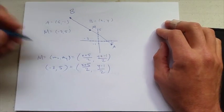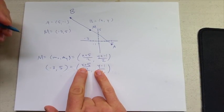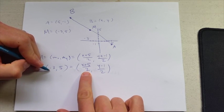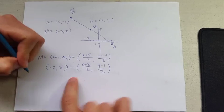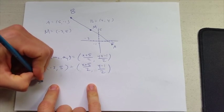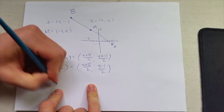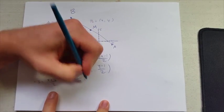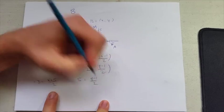Our goal is to find x and y, so all I have to do—we have this point equals this point, so our x coordinates have to match, our y coordinates have to match. There's really two equations: -3 = (x + 5)/2, and 5 = (y - 1)/2.